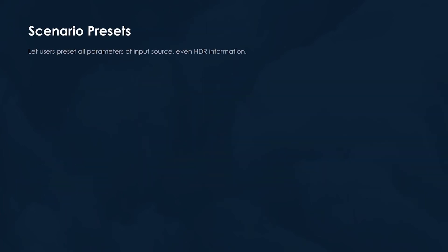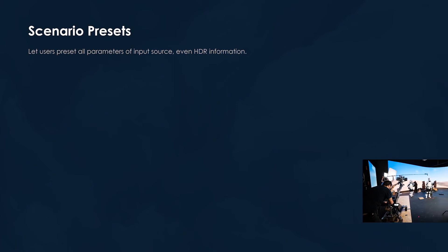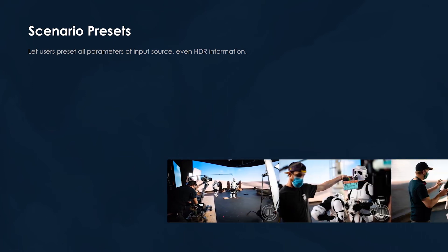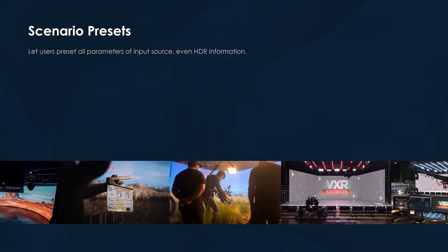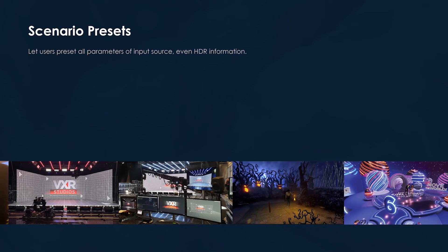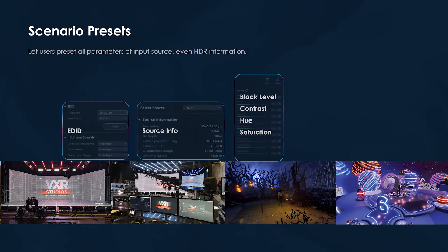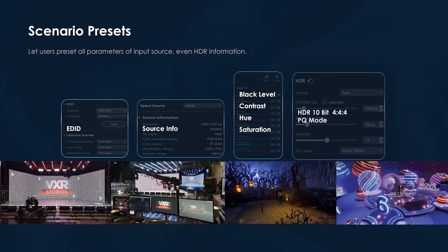Customising settings can be time-consuming, but once an ideal result is achieved, Novastar's Vision Management Platform allows those settings to be saved as presets for use in projects that include XR Studios, film production, product launches, and television broadcasts. This includes EDID, source information, black levels and contrast, hue and saturation, HDR and more. Note that HDR 10-bit, 4:4:4 and PQ mode is supported for outstanding HDR performance.